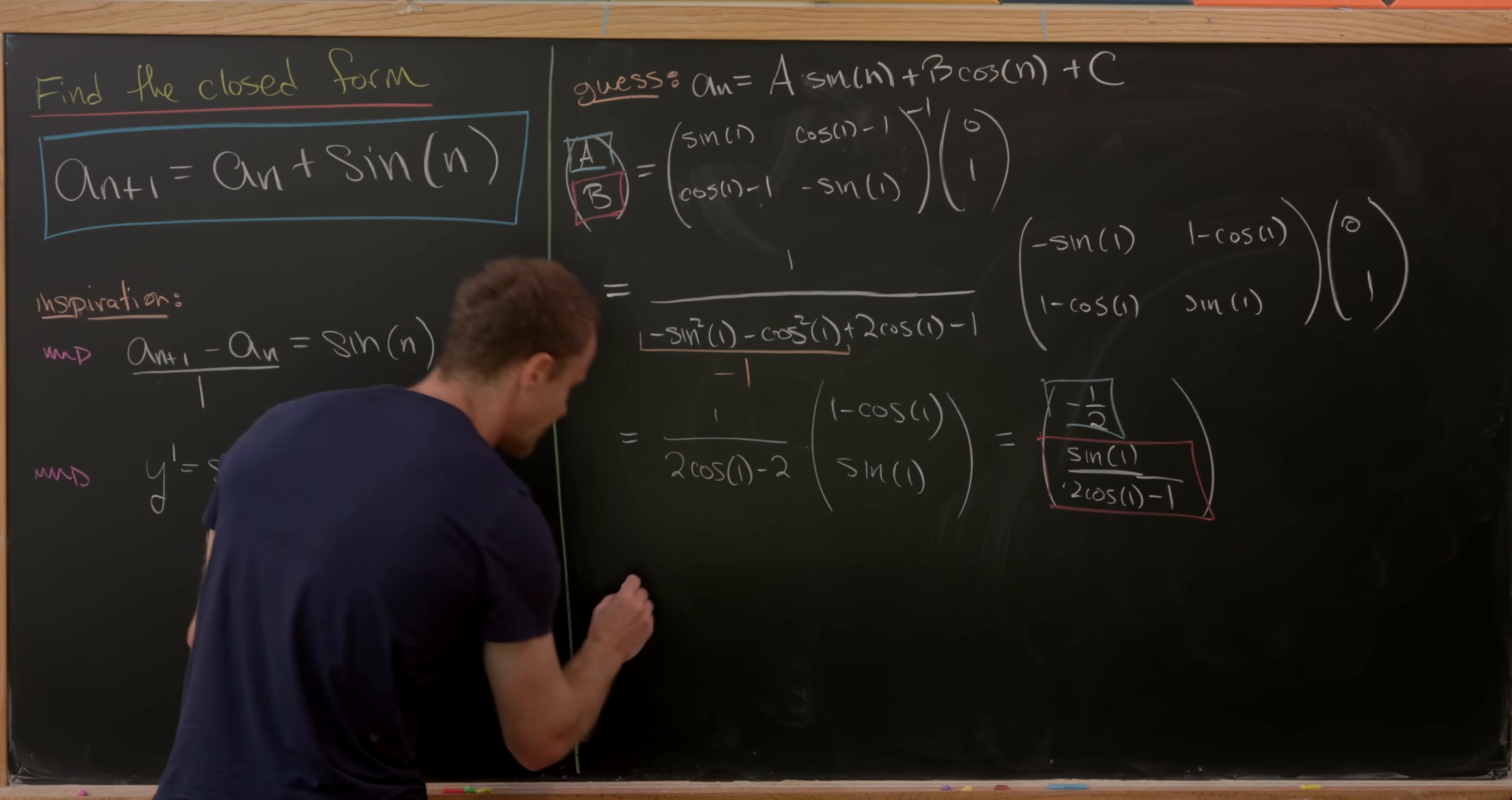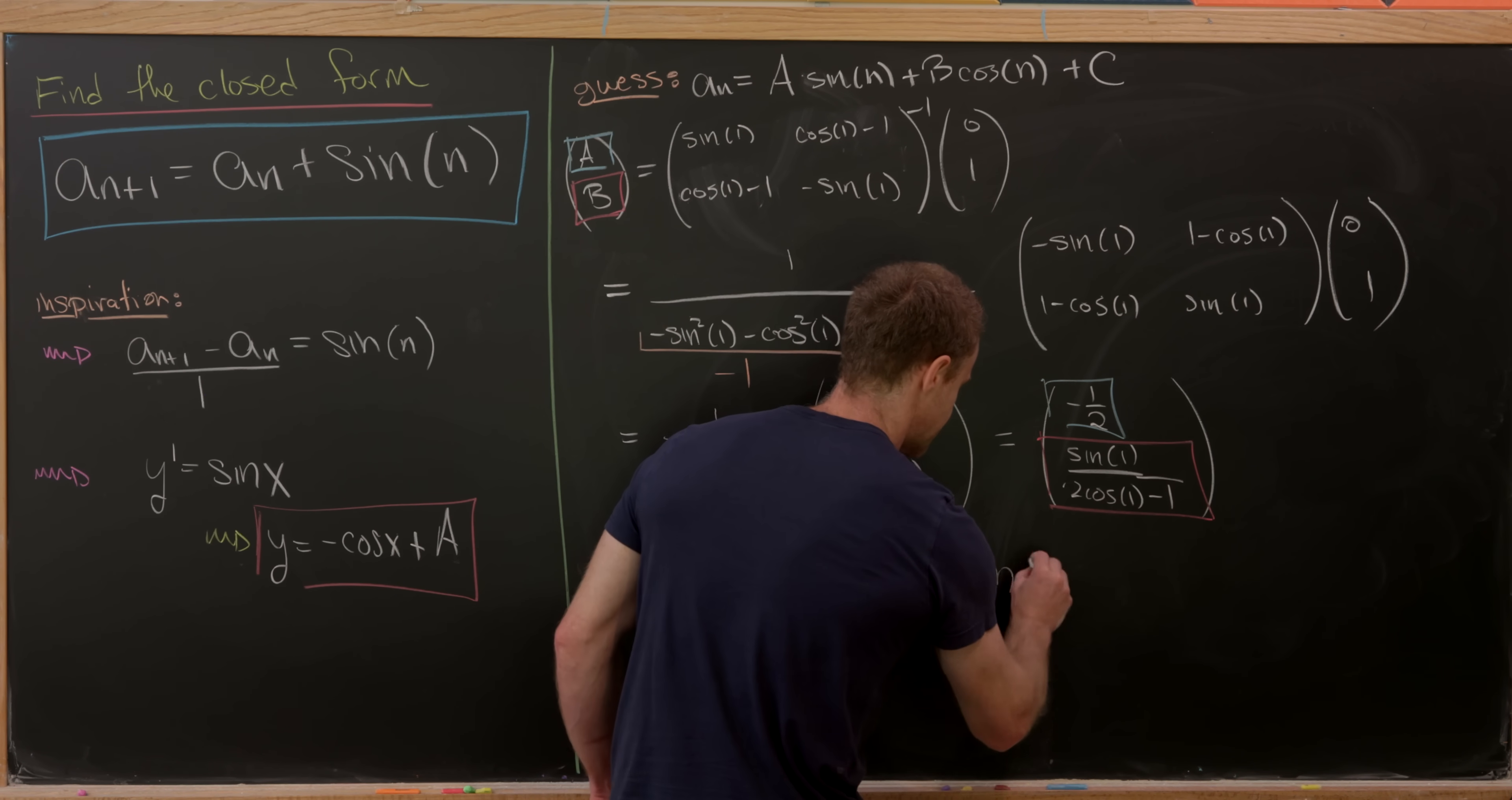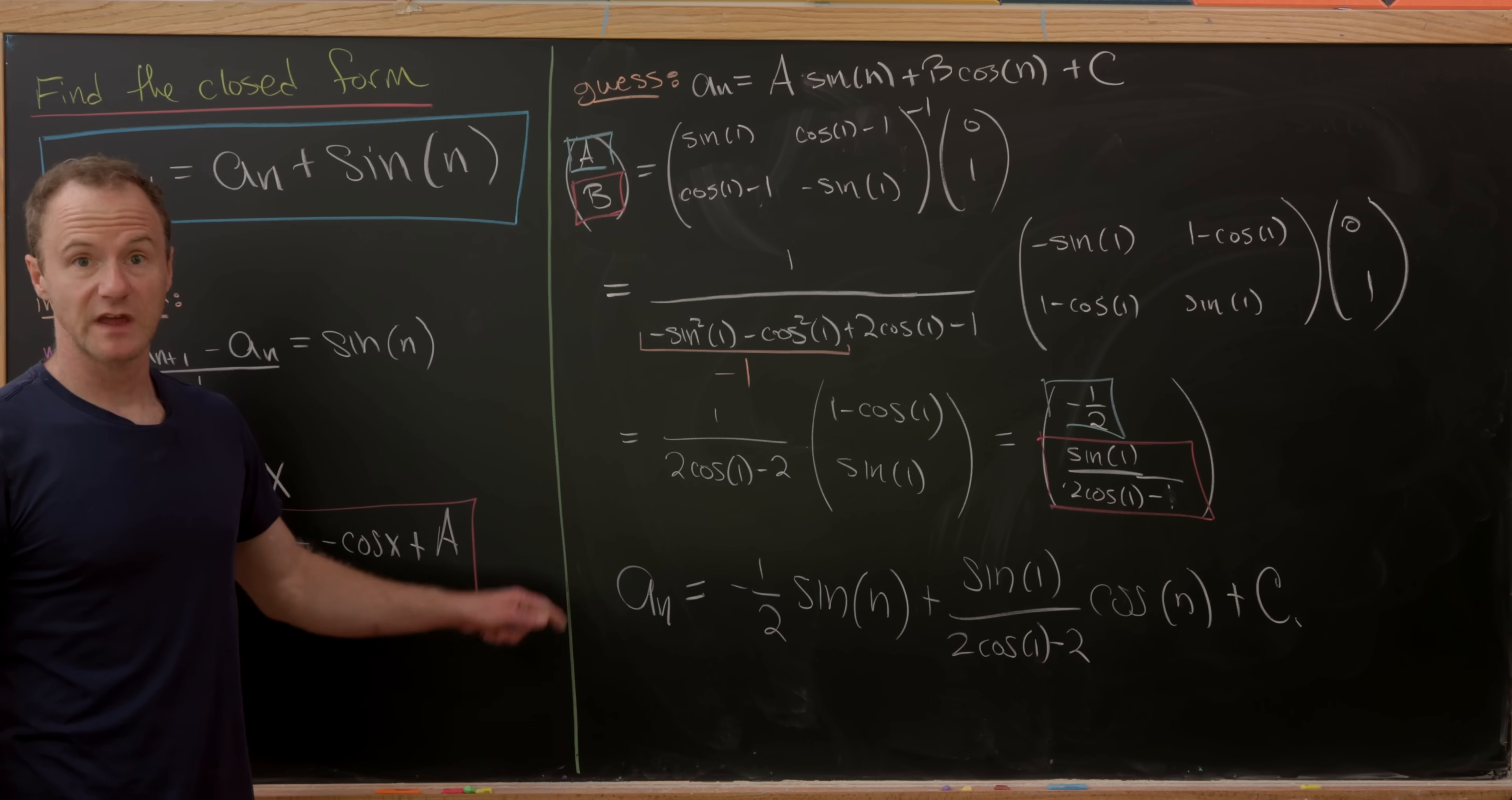But that means we can write down a closed formula for our sequence. So it'll be minus 1 half times sine of n, and then plus sine of 1 over 2 cosine of 1 minus 2. So that should have been 2 times the cosine of n plus our constant c.